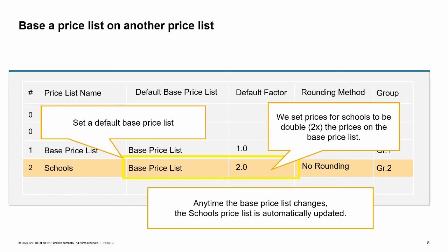For example, if an item is priced at 10 on the base price list, the same item on the school's price list will be priced at 20. Anytime prices are changed on the base price list, the corresponding price on the school's price list is automatically updated so that the price is always double the base price.